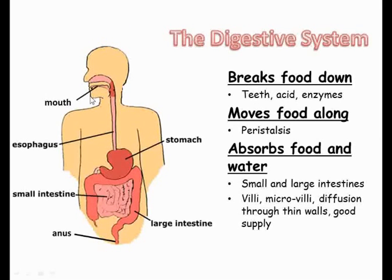A quick recap: the alimentary canal is what the food actually passes through. It is made up of the mouth, oesophagus, stomach, small intestine, large intestine, and anus. The pancreas, liver, and gallbladder are also part of the digestive system but not of the alimentary canal, because they are involved in making, storing, and processing substances involved in digestion, but the food itself does not pass through them. You should be able to see how digestion links to the circulatory system, as the products are transported away from the small intestine to the rest of the body. One of these products is sugar, which was produced by starch being broken down by amylase into glucose. Glucose is needed by every single cell in the body for respiration.